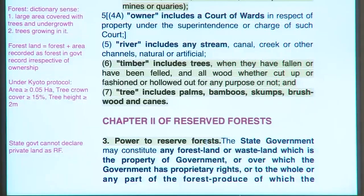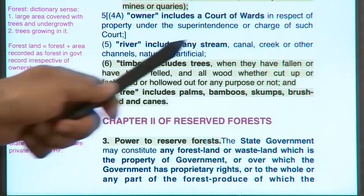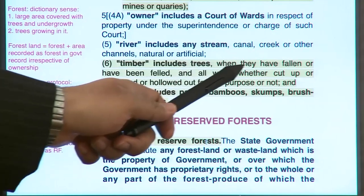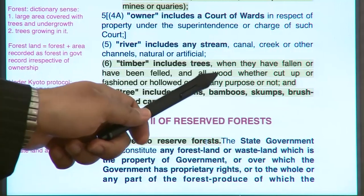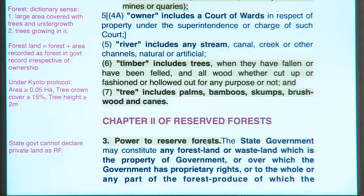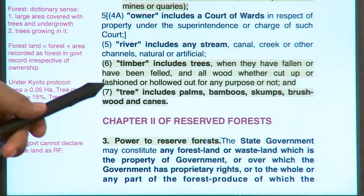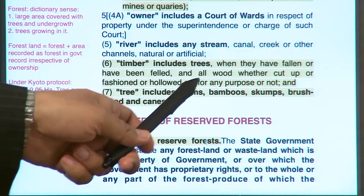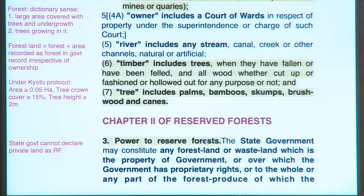What is timber? Timber is defined as trees when they have fallen or have been felled, and all the wood whether cut up, fashioned, or hollowed out for any purpose or not. So timber includes all sorts of trees and materials derived from trees, whether processed or not. What is a tree? Tree includes palm, bamboo, scum, brushwood, and canes. However, with a later amendment, bamboo was removed from this list and is no longer considered a tree.